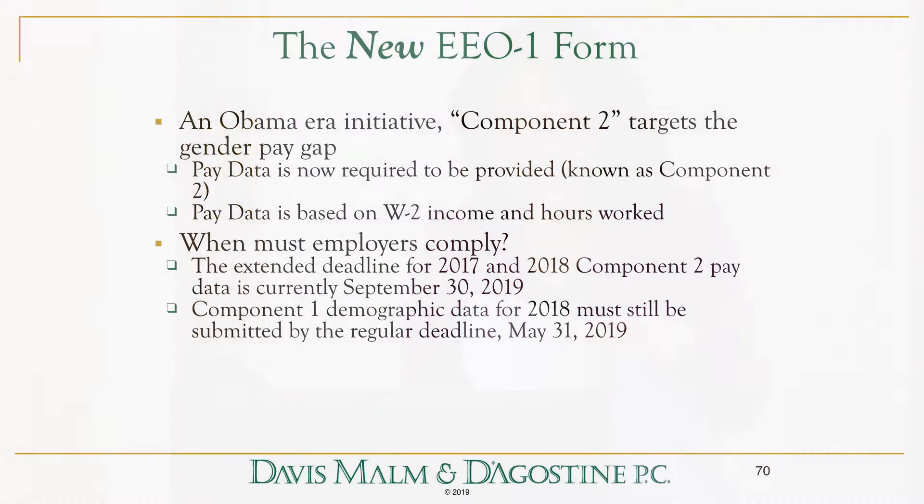It also applies to contractors — federal government contractors and first-tier subcontractors with 50 or more employees and at least $50,000 in federal contracts. The form needs to be filed annually, and the deadline is generally May 31st of each year.